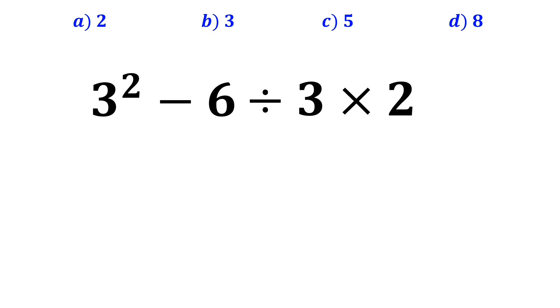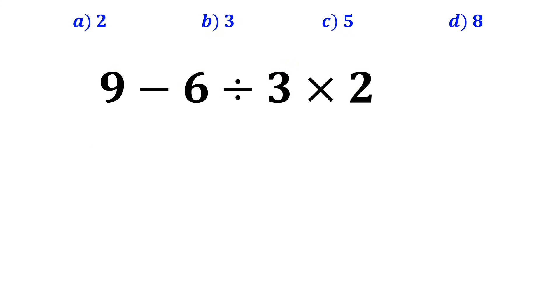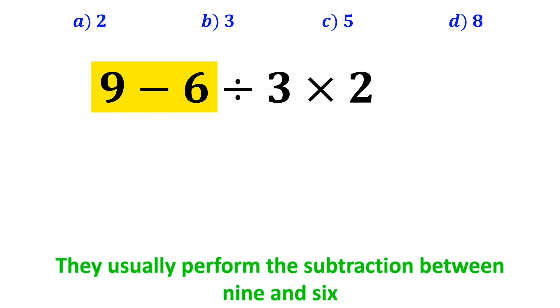To solve this problem, many people start by calculating 3 squared first. And instead of the original expression, they rewrite it as 9 minus 6 divided by 3 times 2. In the next step, they usually perform the subtraction between 9 and 6, and simplify the expression to 3 divided by 3 times 2.